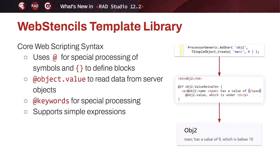Let me show you a very simple demo. In the code, you can have an object — in this case a simple object with a name and a value — and you give it a name like 'object2' and make it available to the processor. In the HTML, you can access information like @object2.name or @object2.value, or invoke properties and operations within a conditional statement — for example, checking if that value is below 10.